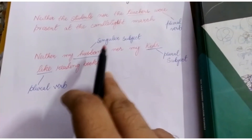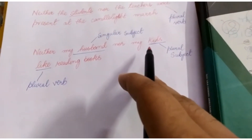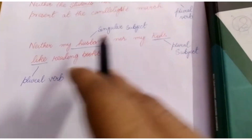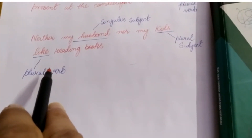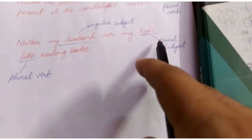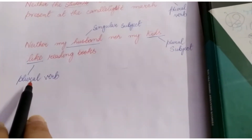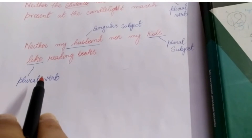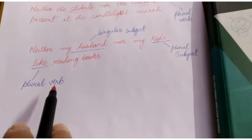When there is one singular subject and one plural subject in a sentence, what kind of verb do we use? In this case, the verb is going to agree with the subject that is closest to it. If the verb is closest to a plural subject, it has to be a plural verb. If the verb follows a singular subject, it would be a singular verb. This is another important rule when using correlative conjunction pairs.